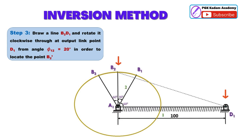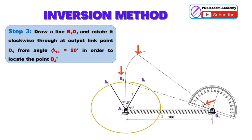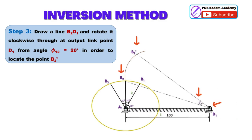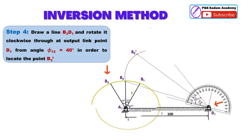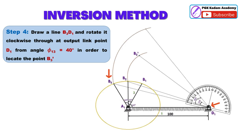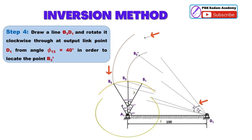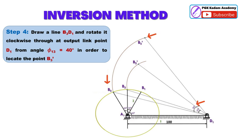Step 3: Draw a line B2D1 and rotate it clockwise at output link point D1 through angle phi 12 equal to 20 degrees, in order to locate the point B2 dash. Step 4: Draw a line B3D1 and rotate it clockwise at output link point D1 through angle phi 13 equal to 40 degrees, in order to locate the point B3 dash.